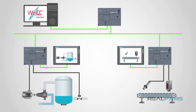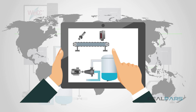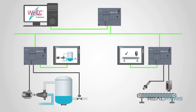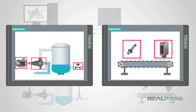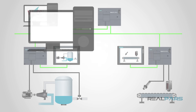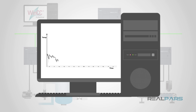A SCADA system is a collection of both software and hardware components that allow supervision and control of plants, both locally and remotely. The SCADA also examines, collects, and processes data in real time. Human-Machine Interface or HMI software facilitates interaction with field devices such as pumps, valves, motors, sensors, etc. Also within the SCADA software is the ability to log data for historical purposes.